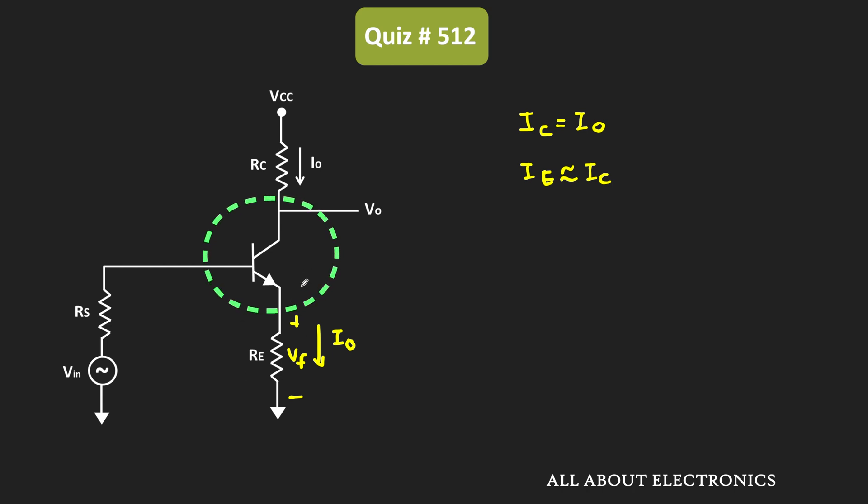Because if you see over here, then this small signal voltage Ve or this Vf is equal to the drop across this emitter resistor. That is equal to this I0 Re. And here, the base voltage Vb of this transistor is approximately equal to Vin. So here, if you see the Vbe, then that is equal to this Vin-Vf.